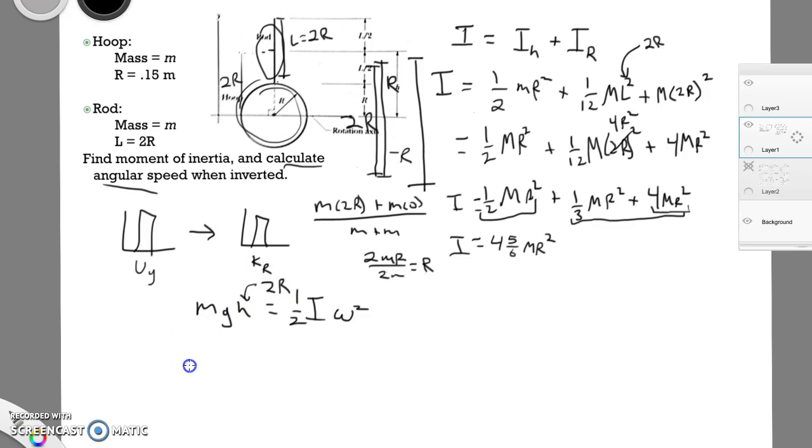So we're going to say M times G times 2R equals 1 half times 4 and 5 sixths. Let's actually do this. Let's convert, let's simplify it. So 4.83 MR squared times omega squared. The M is going to cancel out. These are the same M. One of these R's will cancel out.